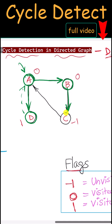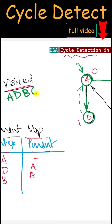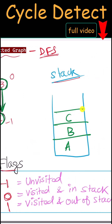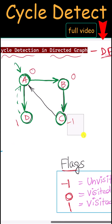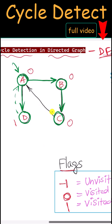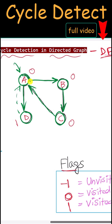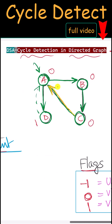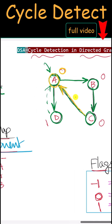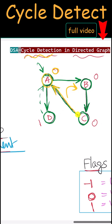Next we're going to visit C. We mark it as visited and push it in our stack. The parent of C is B, and we modify its flag to 0. Now from C we can take an edge and reach node A. Because we are visiting a node which has flag 0, that means we have detected a cycle in our graph.